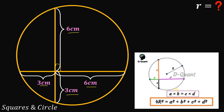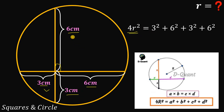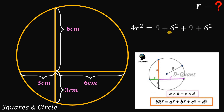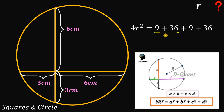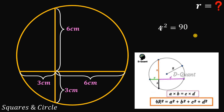We will have a video that proves this relationship, but for now let's apply it. We have: four r squared equals three squared plus six squared plus three squared plus six squared. Three squared is nine and six squared is thirty-six. Nine plus thirty-six equals forty-five, and forty-five plus forty-five gives us ninety on the right-hand side. Dividing both sides by four and taking the square root of both sides gives us r equals the square root of ninety over four.